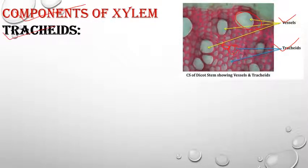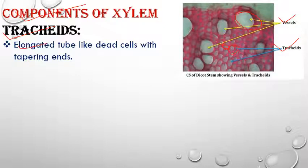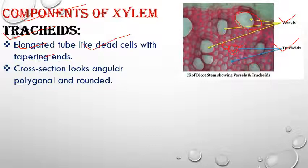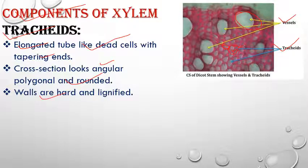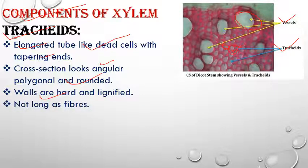Components of xylem — first, tracheids: these are elongated, tube-like dead cells with tapering ends. In longitudinal section they show tapering ends; in radial section they appear somewhat rounded; in cross-section they appear angular or rounded. Their walls are lignified and thick. Tracheids are not as long as xylem fibers.